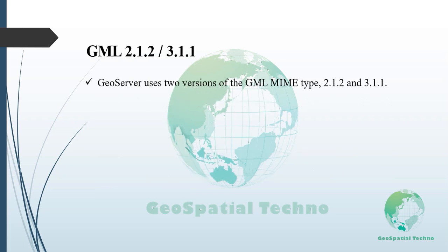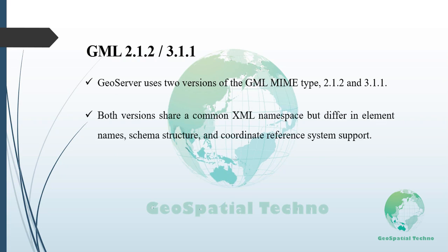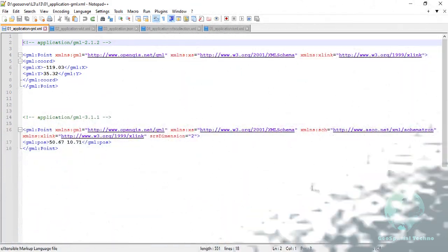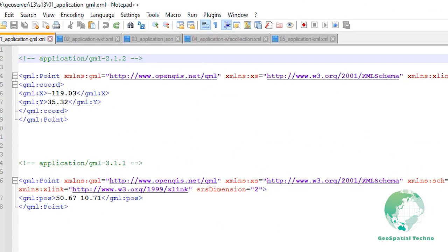GeoServer uses two versions of the GML MIME type: 2.1.2 and 3.1.1. Although both versions share a common XML namespace, they differ significantly in their element names, schema structure, and support for coordinate reference systems. The advancements in GML 3.1.1 facilitate more efficient and effective handling of spatial data, making it a more robust standard for geospatial information. Here is an example of two versions of a text/xml;subtype=GML document.